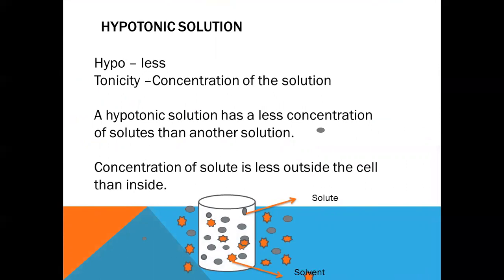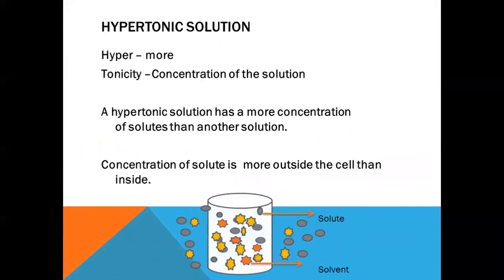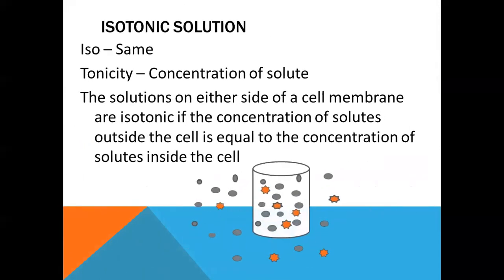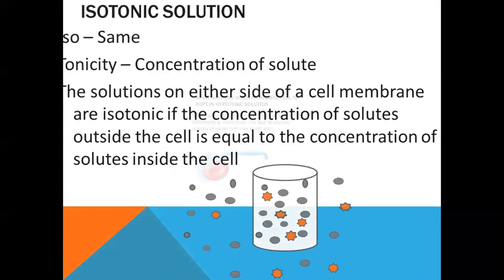Hypotonic solutions are having less concentration of solute, and hypertonic solutions are having more concentration of the solute. Isotonic means same concentration of the solute on either side of the cell membrane.